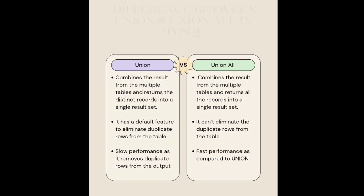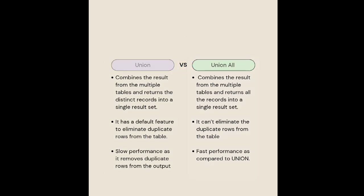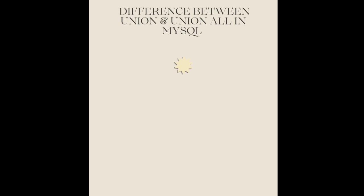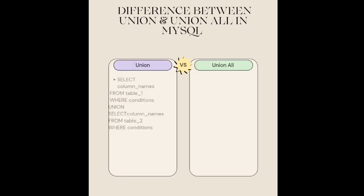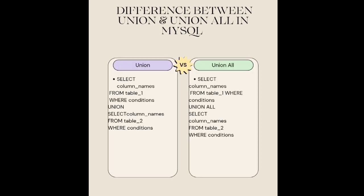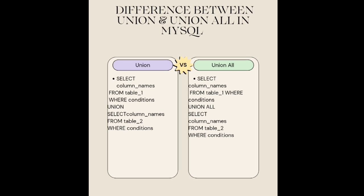Syntax for Union: SELECT column_names FROM table1 WHERE condition UNION SELECT columns FROM table2 WHERE condition.